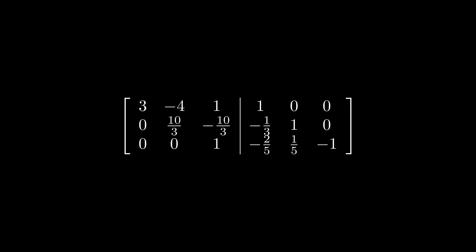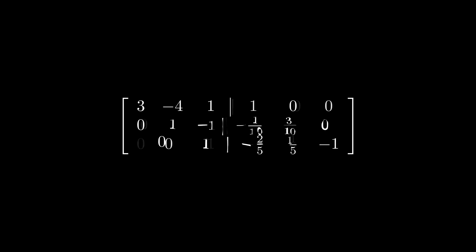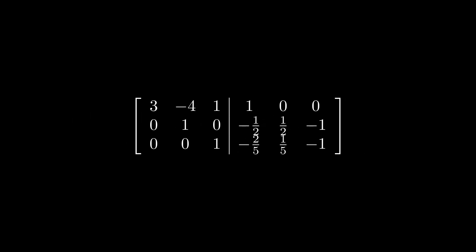Now multiply the second row by three-tenths, then add row three to row two. We've now solved for variables d, e, and f — and notice they're placed exactly where they would be in our inverse matrix, which we labeled a, b, c, d, e, f, g, h, i.